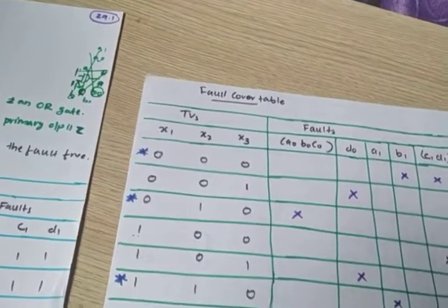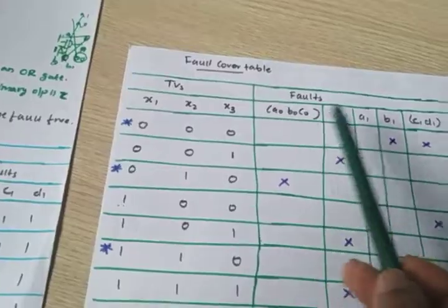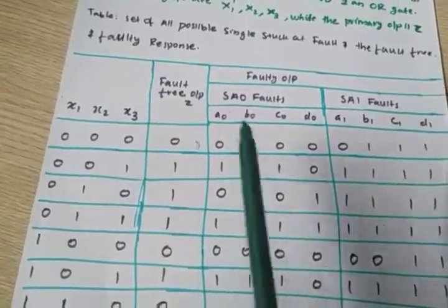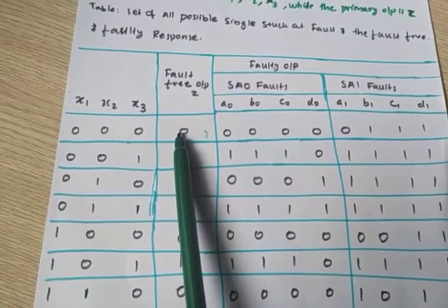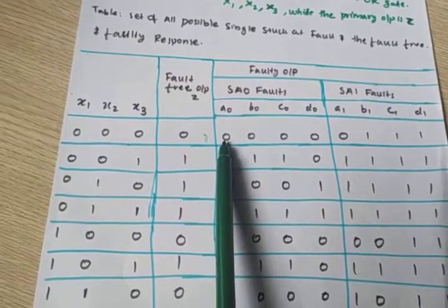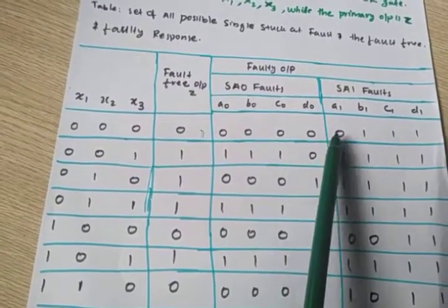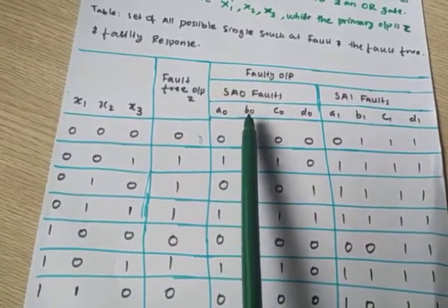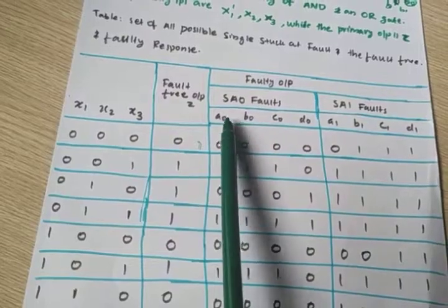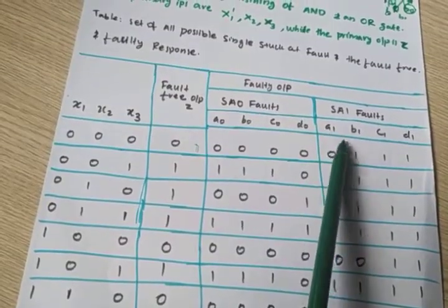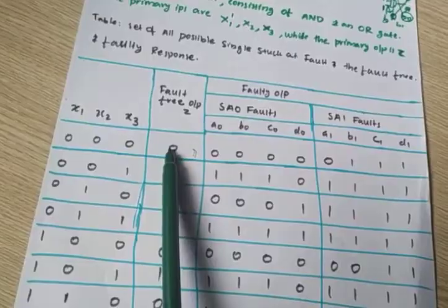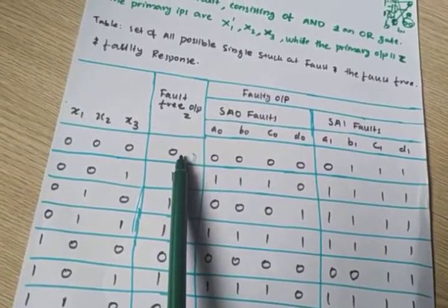In the Fault Cover Table, the first column is Test Vectors, and these are the Faults. Look at this table. Here the expected output is 0. So for A0 it is 0, B0 is 0, C0 is 0, D0 is 0, A1 is 0. That means A0, B0, C0, D0 are the fault states. In all these cases, the output is 0 as expected — so this is the fault-free output.